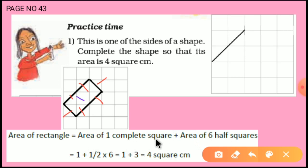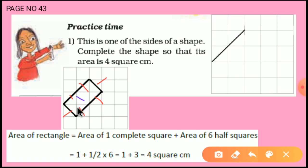Area of 1 complete square plus area of 6 half squares. 1 complete square is 1, plus 6 half squares, that is 1 half multiplied by 6. 2 threes are 6, that is why 1 plus 3 equals 4 square cm. So the area of this rectangle is 4 square cm.